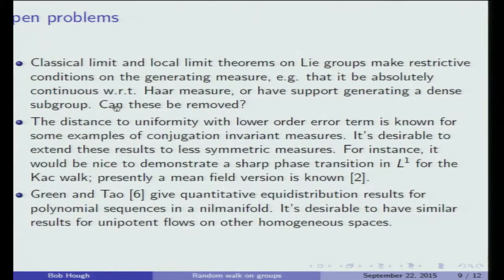I'll just mention a handful of open problems. The classical and local limit theorems on Lie groups tend to make restrictions on the measure that's the generating measure. Either that it be continuous with respect to Haar measure, or have support generating a dense subgroup. For instance, I forgot to mention it, but the local limit theorem that Persi and I have refines a theorem of Breuillard, who had proved a local limit theorem on upper triangular matrices over R, where the support generated was dense in the upper triangular matrices over R. So now we have a theorem over the integers. That's sort of a typical situation that the field is in. For discrete groups, the local limit theorems may not be known.